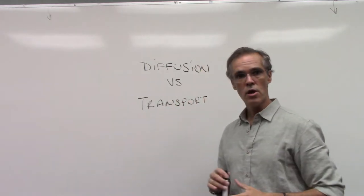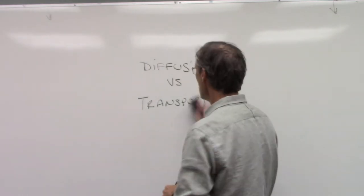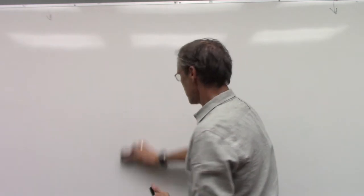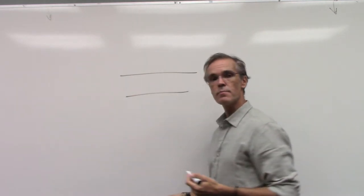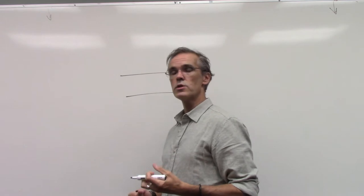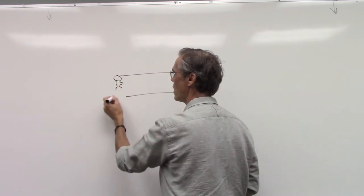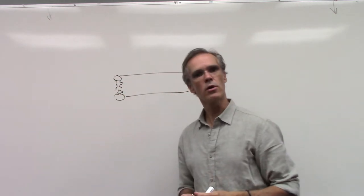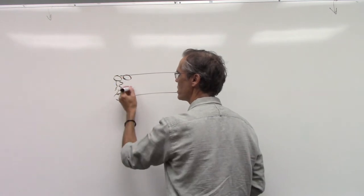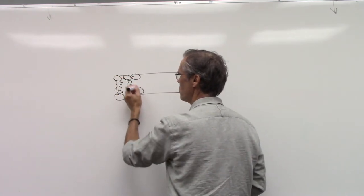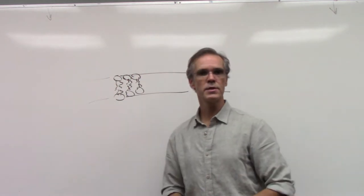We're going to talk about diffusion versus transport, and we'll see there are fundamental differences between those two terms. When you think of any cell, there is a membrane, and that membrane is made of a molecule — a phospholipid — that has a polar head with two hydrophobic tails. Throughout this membrane, all of those phospholipids surround the entire cell.